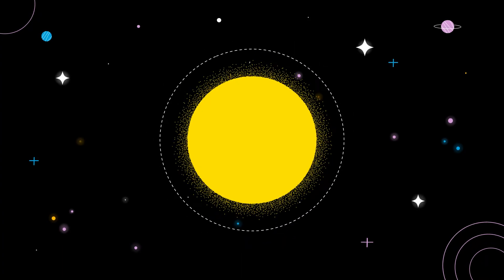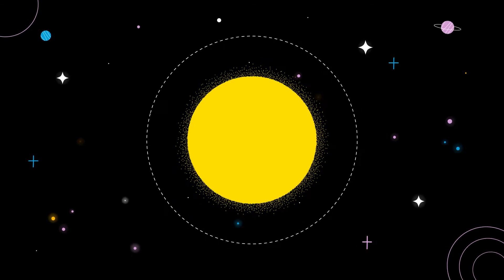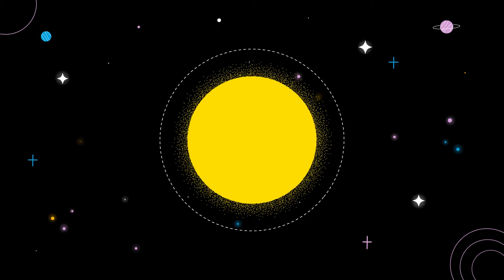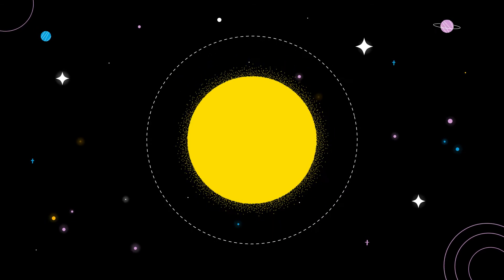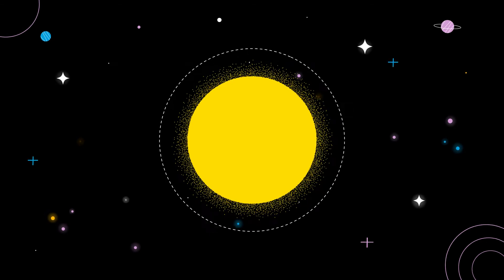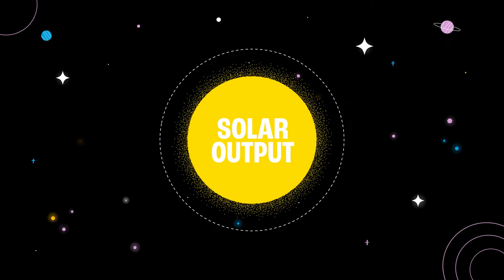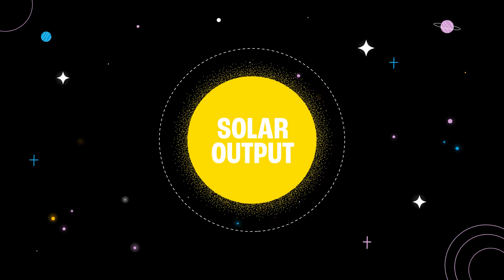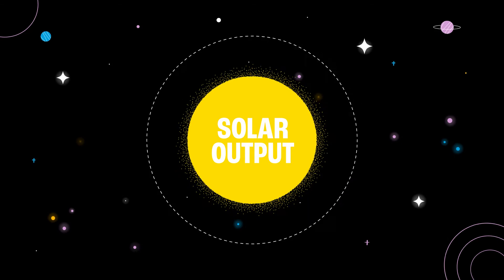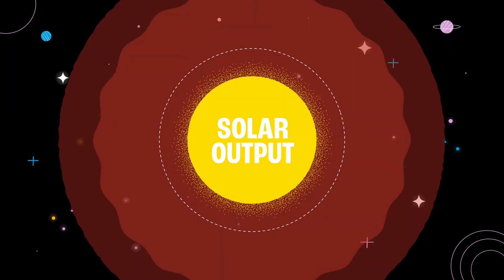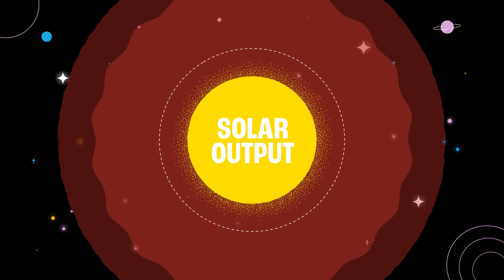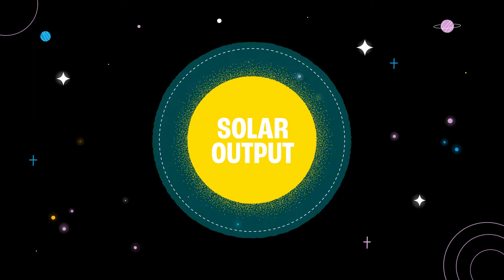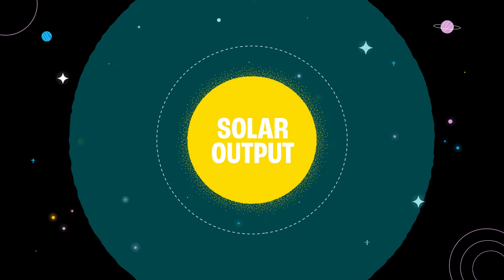These past global warm and cold periods are thought to have been caused by natural things. Firstly, the amount of heat, also known as solar output, that the sun releases can fluctuate or change. If the sun releases more heat, then the global temperatures will go up. If the sun releases less heat, they'll go down.